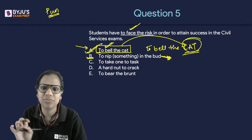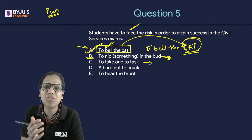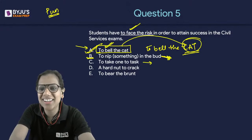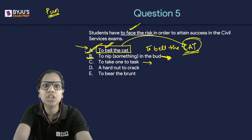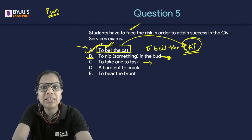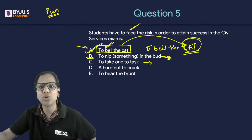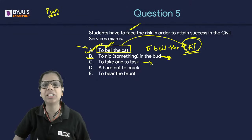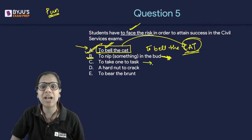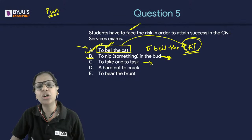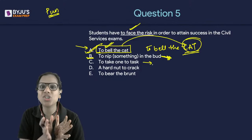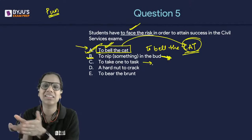To take one to task — in Hindi we say 'aaj toh iski class lagati hoon,' which is equivalent to taking someone to task: you scold them, criticize them, and make them realize they've done something wrong. To bell the cat means to do a task that is very risky — imagine being a mouse and being told to tie a bell around a cat's neck. When given such a difficult, risky task, you are asked to bell the cat.